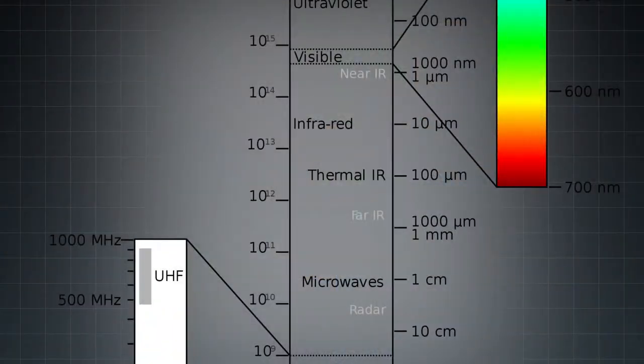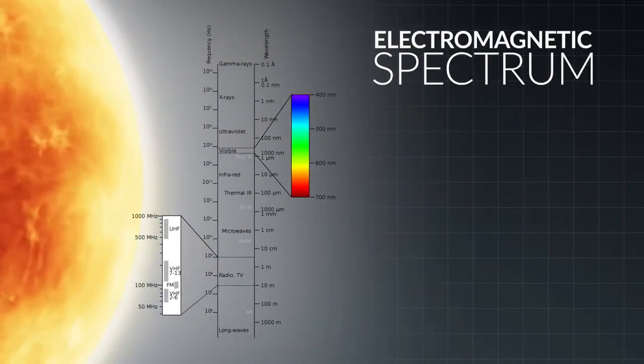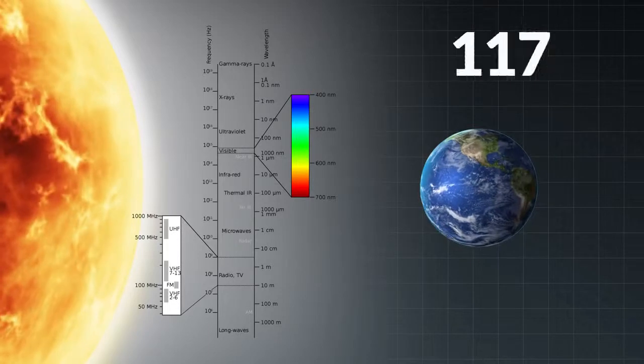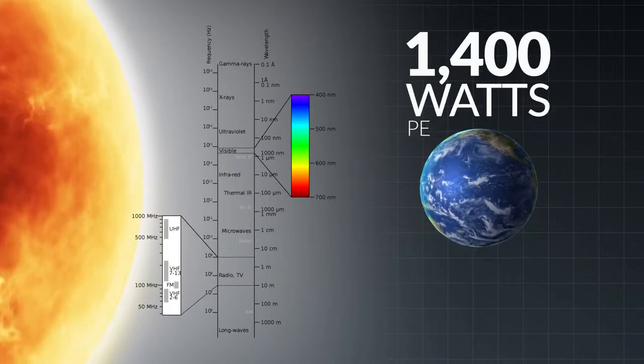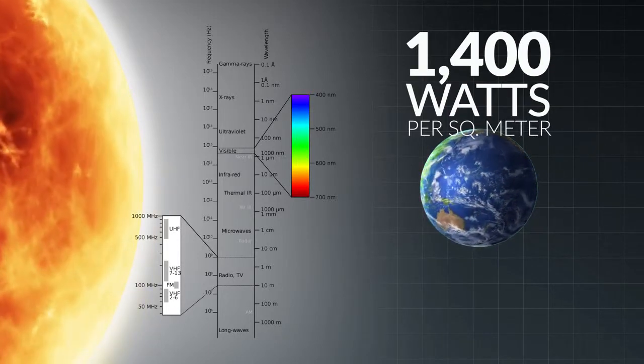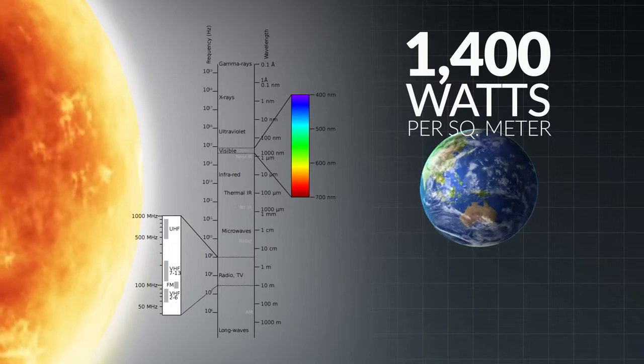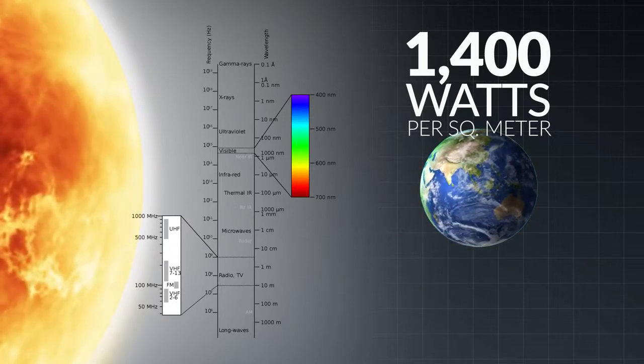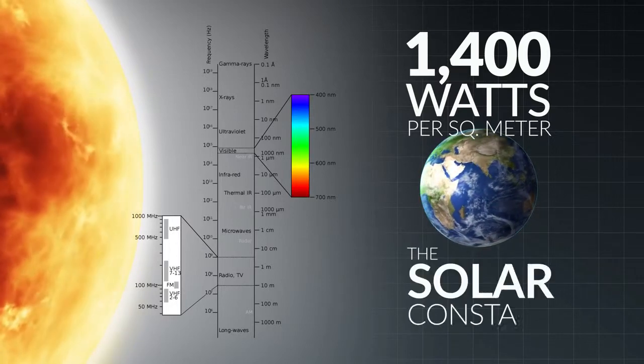The Sun actually gives off varying amounts of all of these energies. The amount of energy that Earth receives from the Sun is approximately 1400 watts per square meter on our surface. It is so consistent that it is referred to as the solar constant.